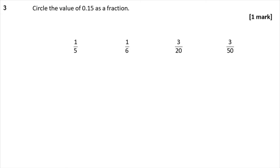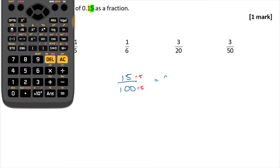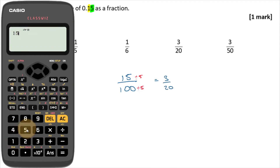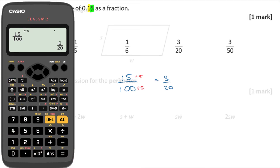Question 3: Circle the value of 0.15 as a fraction. Remember that in decimal numbers, that's tenths and hundredths, so 0.15 is the same thing as 15 over 100, which you could then cancel down. Both those numbers divide by 5, giving you 3 over 20. If you struggle to simplify fractions, remember you can just type them into your calculator and it will do it for you.